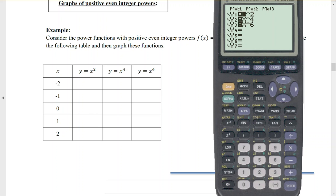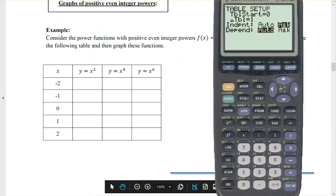Next thing I'm going to do is go into my table set. Do second, window, and I want to make sure that my independent variable, remember that's the input for your x's, is on ask. I want to be able to tell it what to put in for x, and then it'll automatically come out the dependent variable or the y value. Once I've got it set up on ask, and to do that, you just scroll down and then hit enter, and it'll toggle back and forth on that.